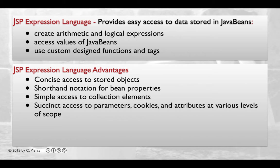Succinct access to parameters, cookies, and attributes at various levels of scope. To access the standard types of scoped data, you can use one of several predefined implicit objects.